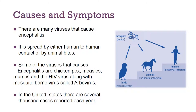There are more than a dozen viruses that can cause encephalitis. It is spread by human-to-human contact or by animal bites, and the exact cause is often unknown. Some of the viruses include chicken pox, measles, mumps, HIV virus, and also a mosquito-borne virus called arbovirus. In the United States alone, there are several thousand cases reported each year.